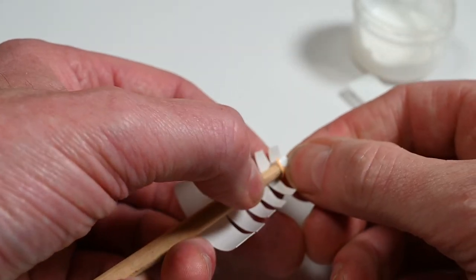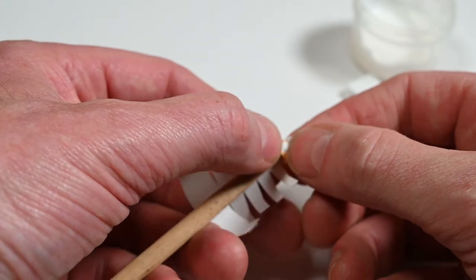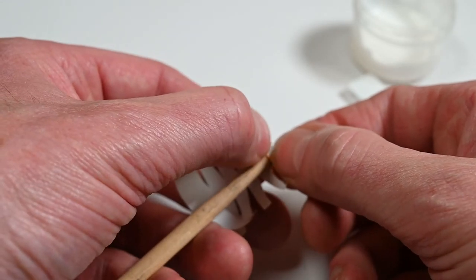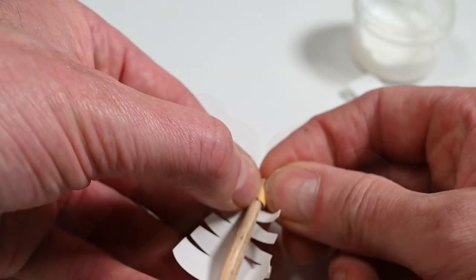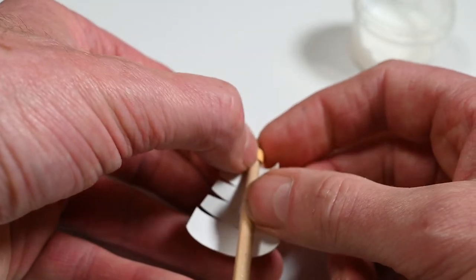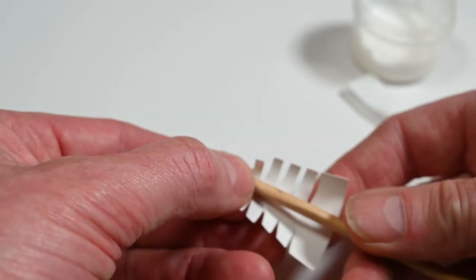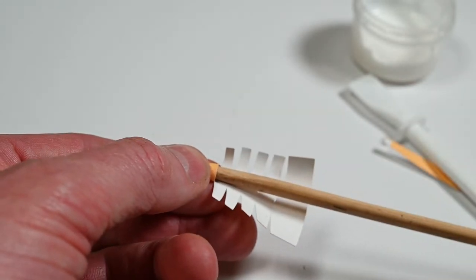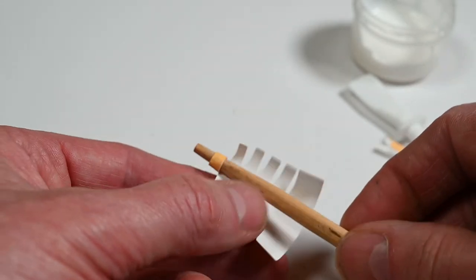And curve that. The other side over. To match it. There we go. So that's the first section set. And basically I just work my way down. Glue in each of the sections like that. It's obviously not glued to the chopstick, that's just there as a former.